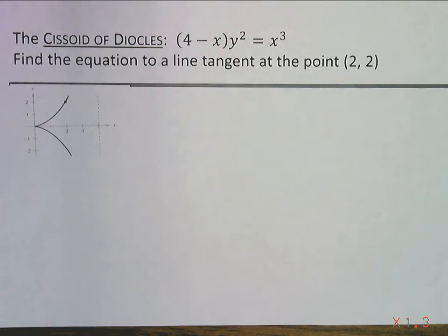All right kids, here is the example we didn't get to in class, finding the equation of a tangent line, a line tangent at the point (2, 2) for the Cissoid of Diocles.